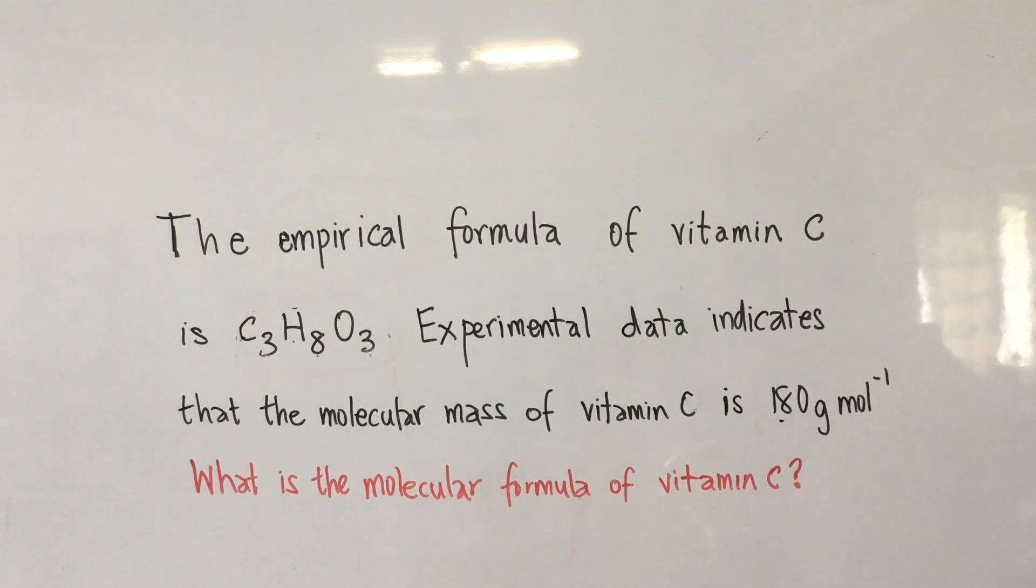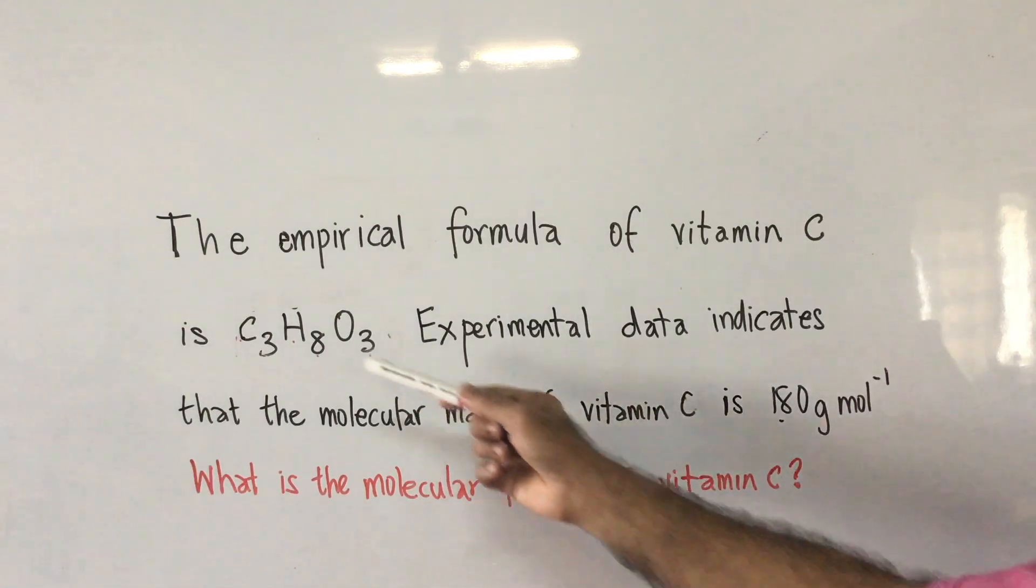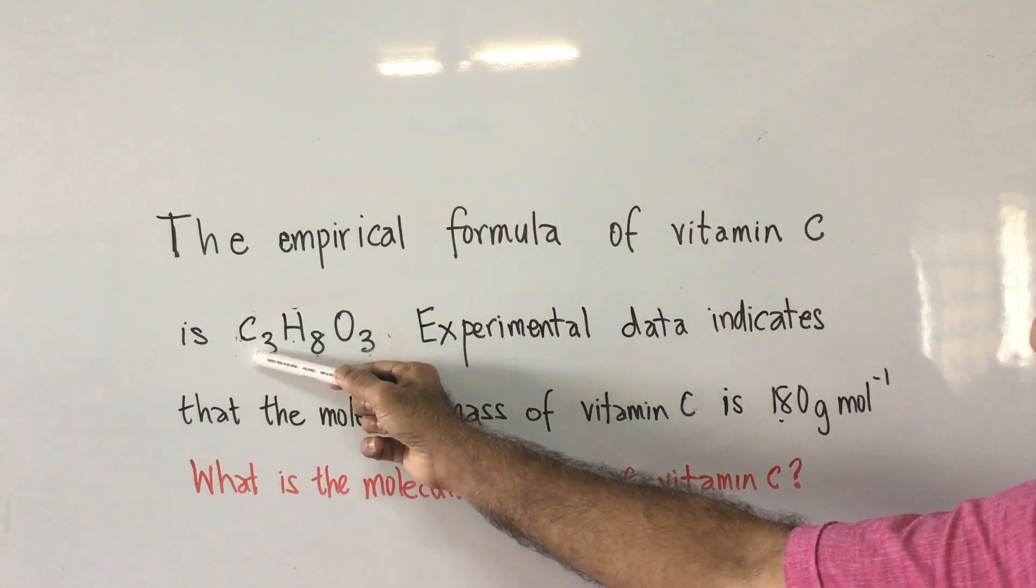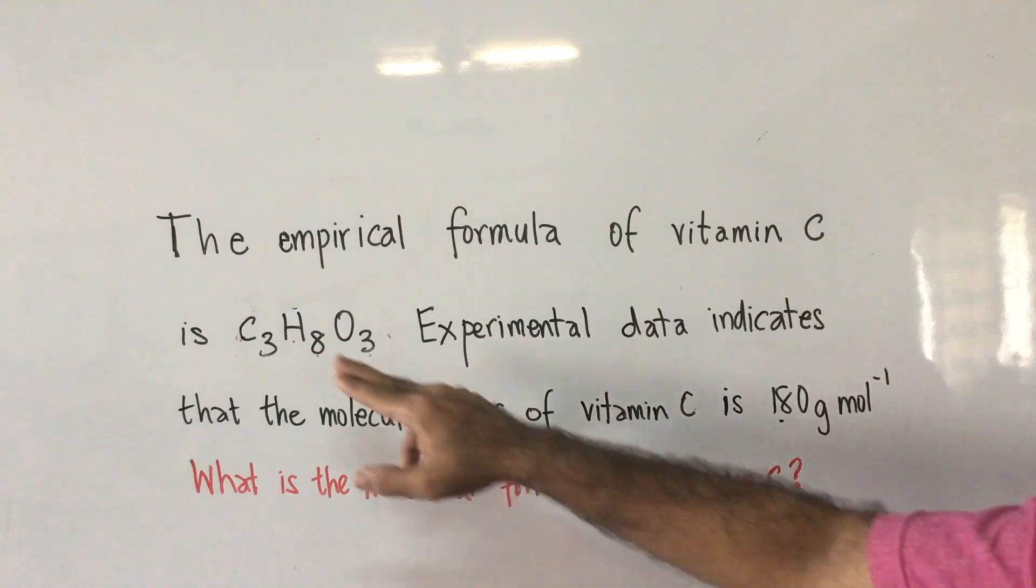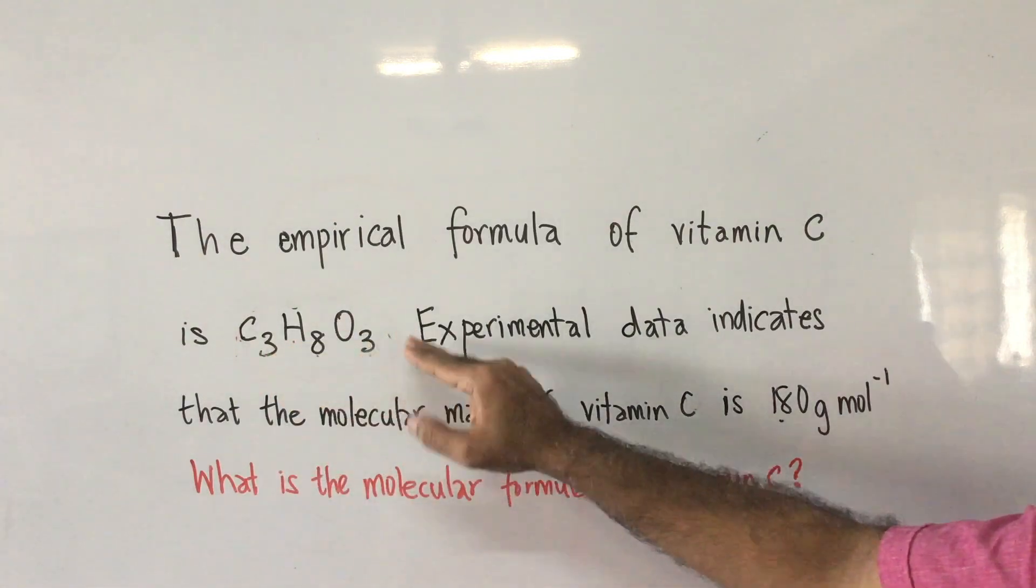It takes some kind of experimental data, figures out the relative amounts of carbon, hydrogen and oxygen in moles, and reduces that ratio to the simplest whole number ratio.